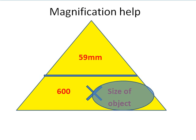The size of the object is what we're interested in. We can put in the other values: 600 times magnification and 59mm. Now it would make sense to actually change that to micrometers — 59,000 micrometers — because we're going to divide by 600. So 59,000 micrometers divided by 600 would work out at 98.3 micrometers as the actual size of that cell.